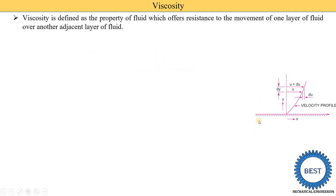Looking at this diagram, this is the land and water is flowing from it — suppose it is a river or canal. Water is flowing for a certain height. Within that height, there are various layers of fluid. This is called one layer, and this is called the adjacent or second layer. Between these two layers there is a certain distance called dy, and the velocity is continuously reduced as the water flows toward the ground.